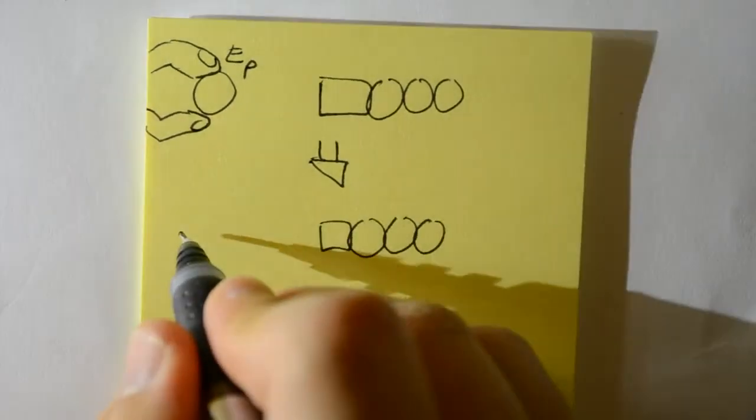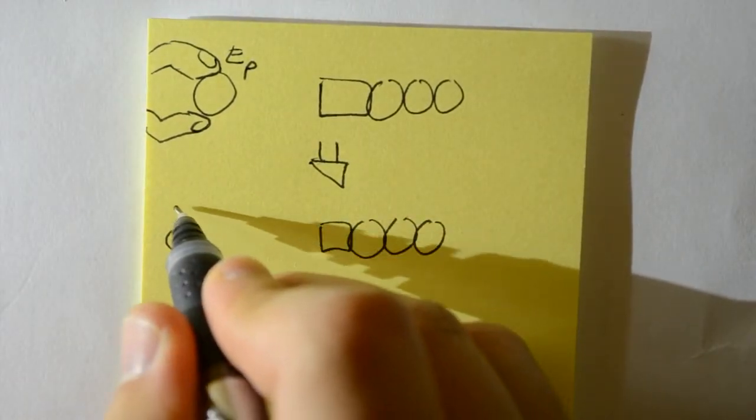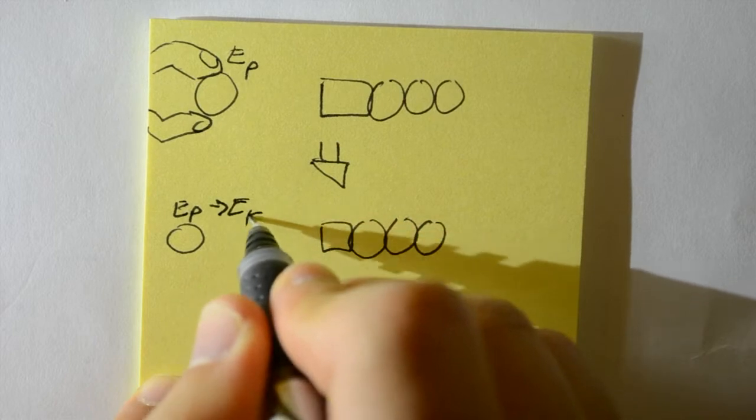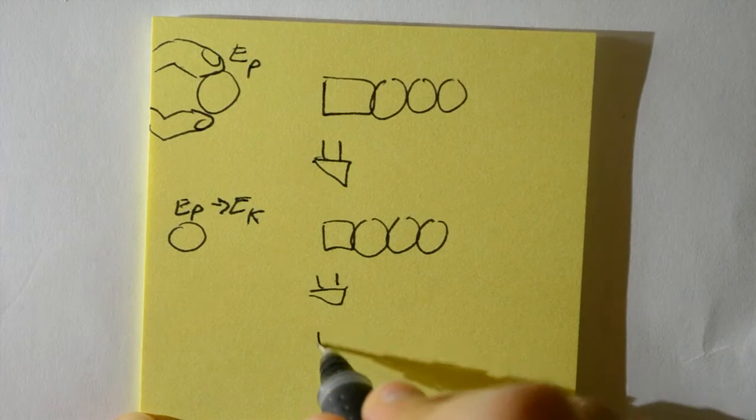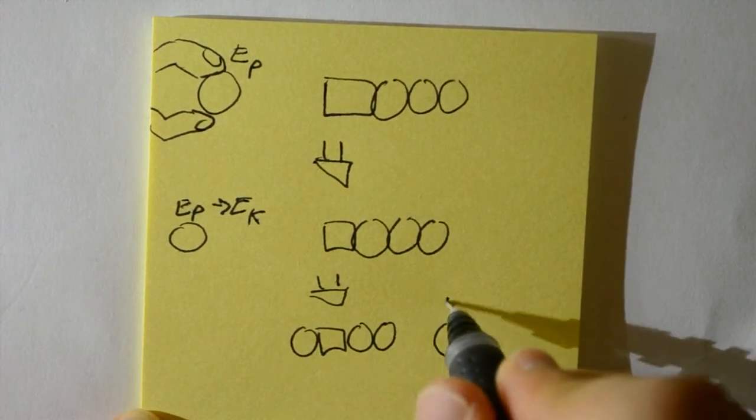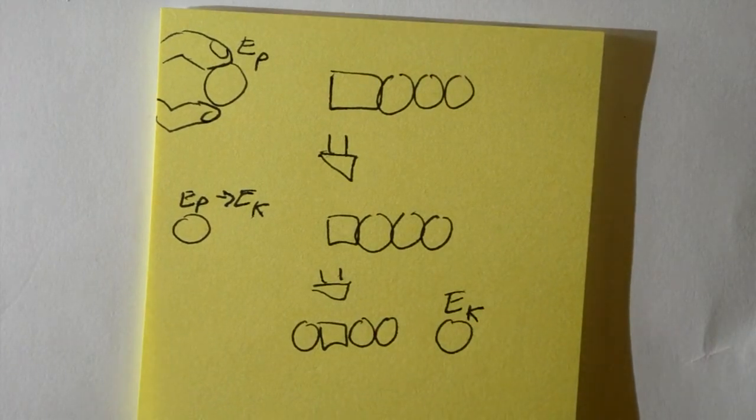When we let go of the ball bearing, the magnetic attraction turns the potential energy into kinetic energy. Then because energy is conserved, most of the energy from the first ball bearing is transferred to the last, however a little bit is transferred as heat and sound.